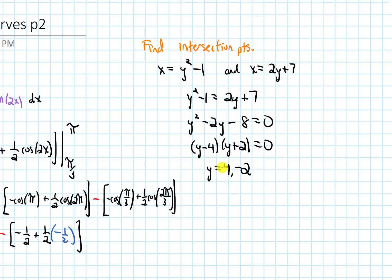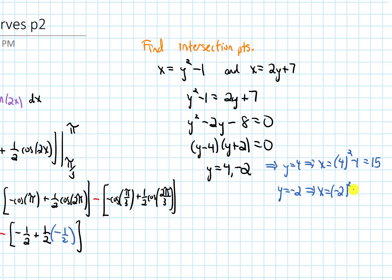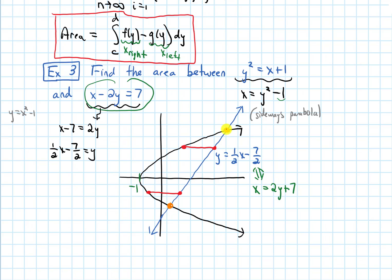I could plug back into either equation to find the x values. In the parabola equation with y equals 4, we get x equals 4 squared minus 1, and that's 15. With y equals negative 2, we get x equals negative 2 squared minus 1, and that's 3. So let's label those in our picture: this point is 15 comma 4, and that lower point has x-coordinate 3 and y-coordinate negative 2.